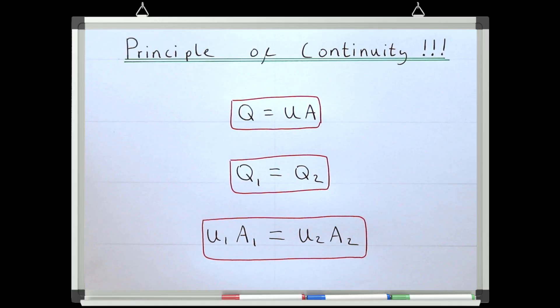We've spent a lot of time in this lesson talking about the assumptions that allow us to use this principle, and it is really important to have some understanding of this underlying theory. However, for the rest of the lesson series, we're only going to deal with steady flow, so for any example we consider going forward in this course, we can always assume that the flow is steady, and thus the discharge is the same at any point in the system. This means we can always use these three equations for any example we consider from this lesson onwards.